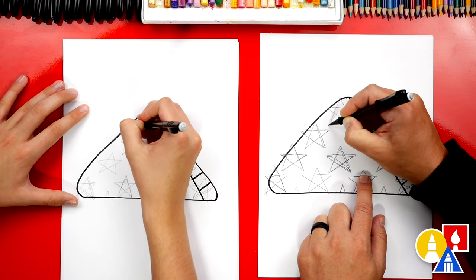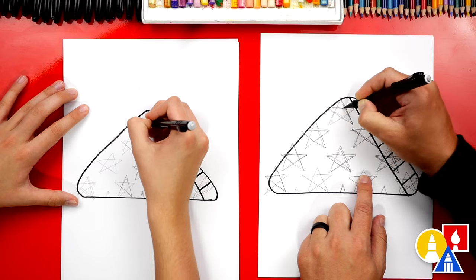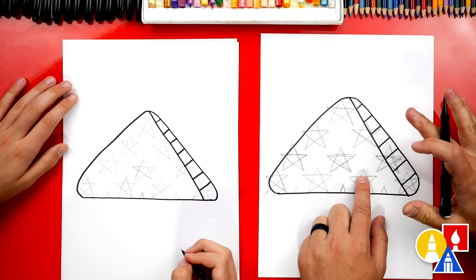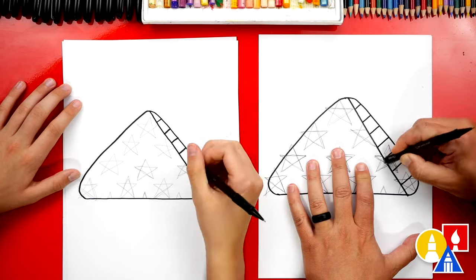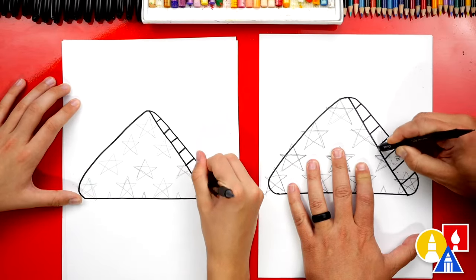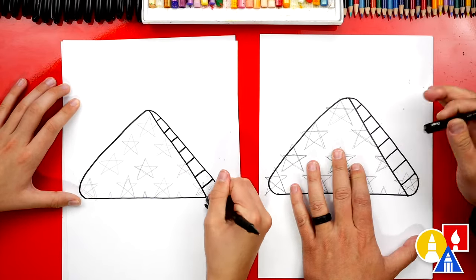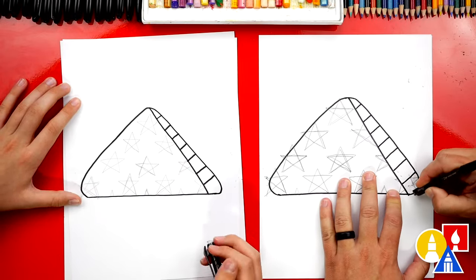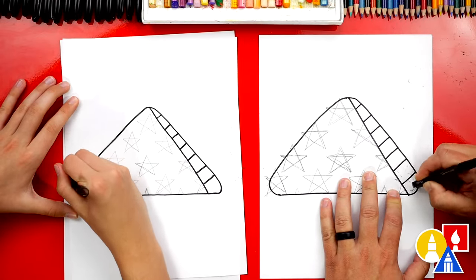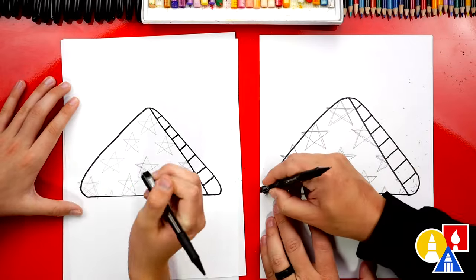Now, if your drawings are slightly different, that's okay. You can add more stars or if you've already run out of room, that's okay too. Next, we're going to switch to our eraser and we're going to erase the stars or part of the star that is outside of the triangle shape. So we'll just go around. We can speed this part up, but we're going to erase all of these extra guidelines.